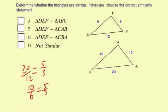And the middle sides, we have 15 to 9, reduces by 3, 5 to 3.